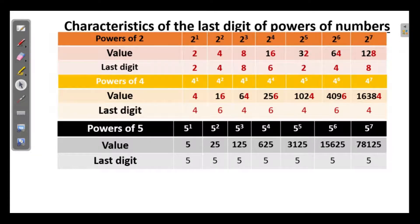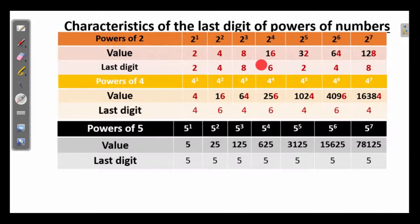Characteristics of the last digit of powers of numbers. First, took the powers of 2: 2, 2 squared, etc. And the values 2, 4, 8, 16, etc. And the last digits are 2, 4, 8, 6, 2, 4, 8, 6. Yes, it is in a pattern: 2, 4, 8, 6, 2, 4, 8.